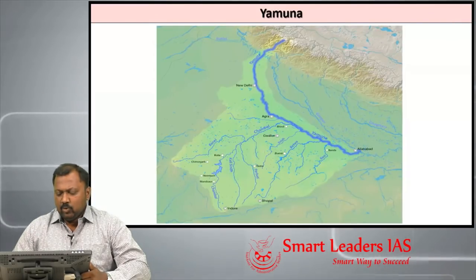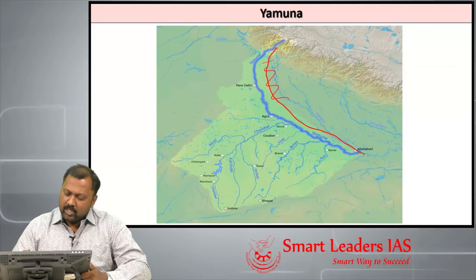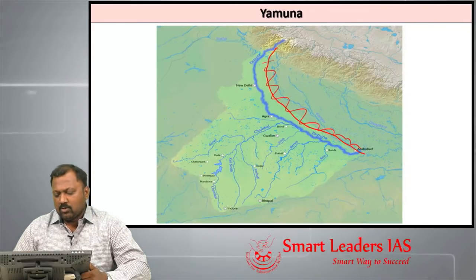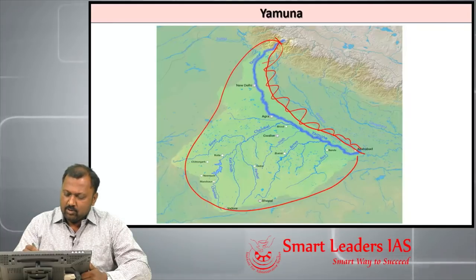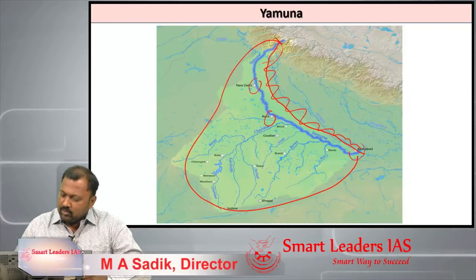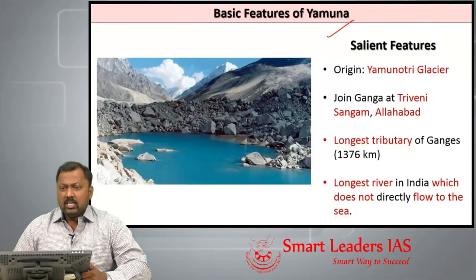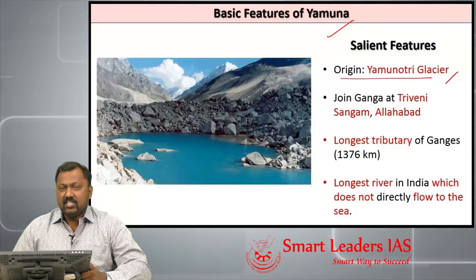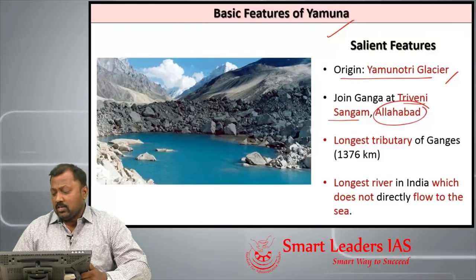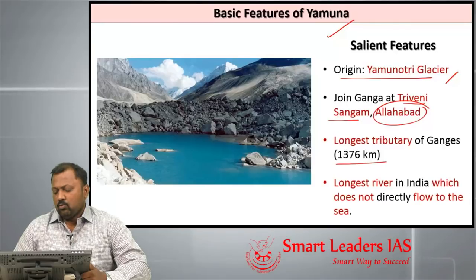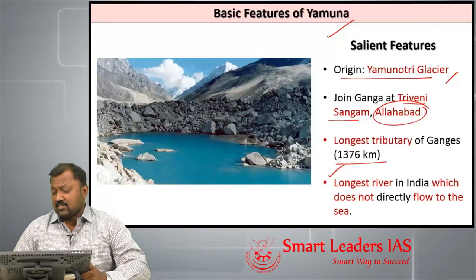This is the Yamuna Basin. The river marked in red is the Ganga, already covered in part 1. In part 2 we will cover the whole Yamuna Basin — from its origin in the Himalayas, traveling down to Delhi, Agra, and finally Allahabad. River Yamuna originates at Yamunotri Glacier, joins Ganga at Triveni Sangamam in Allahabad, and is the longest tributary of river Ganga at 1376 km. It is also the longest river in India that does not directly flow into the sea.